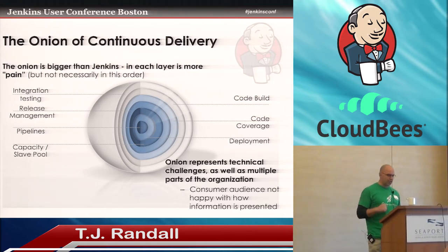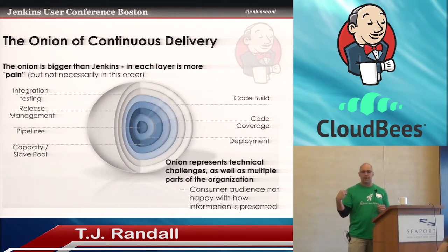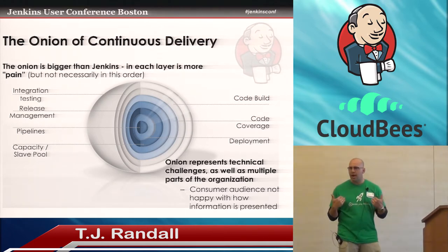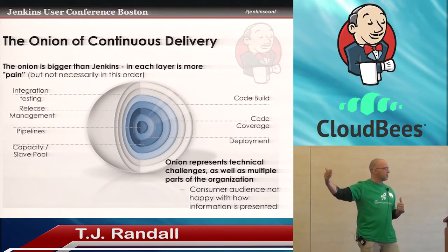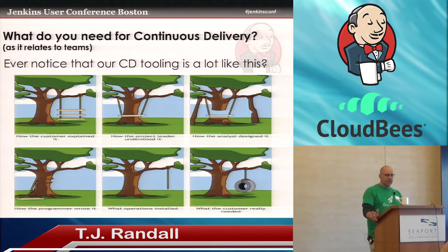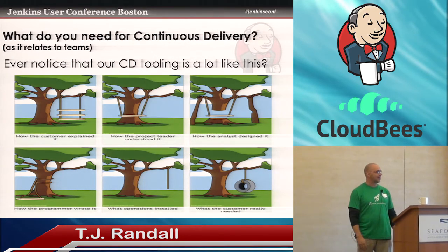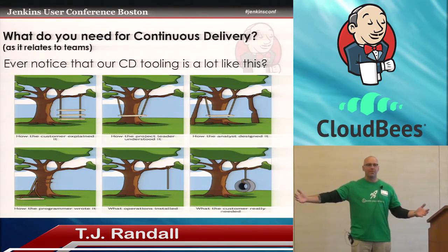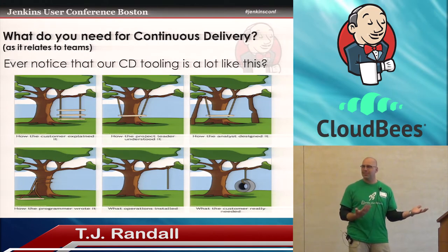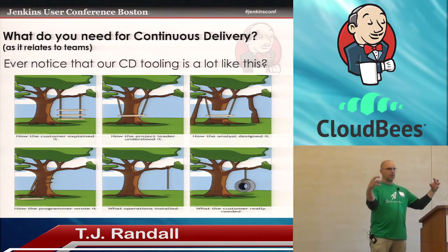This is that onion—peeling back and trying to understand that process. At the end of the day, what the onion represents is a lot of times the consumer audience of your information isn't happy with what is being presented. In Jenkins, the developers love it—they get exactly the information they wanted. But the teams upstream as you're trying to get to production, it doesn't work for them. You end up with a hodgepodge of tooling and silos of information, all these pieces that you're crazy-gluing together. It works because you have to make it work, but it's not really what you wanted.